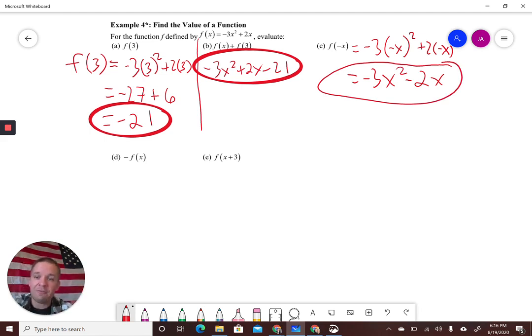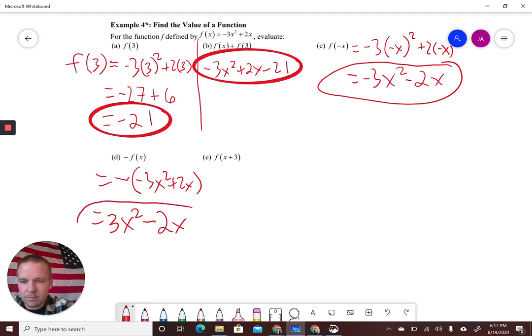All right. How about -f(x)? What does that mean? That means I'm throwing a negative out in front of the entire function. So I would have a negative and then parentheses in front of everything, -3x² + 2x. All right. So, I'm going to have, that's going to be a positive 3x², and then -2x. Excellent.